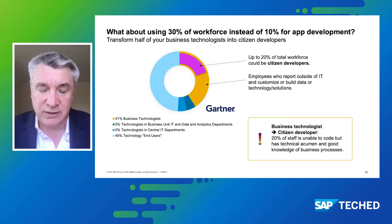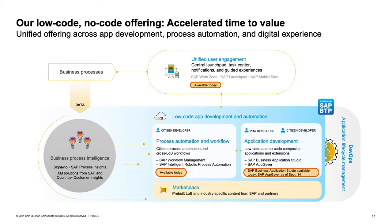Now let's look at the portfolio itself within SAP. There are three different aspects: process automation, application development, and a unified user experience. Before we dive into process automation and workflow, I just want to highlight how this beautifully dovetails with our business process intelligence side — where we look at insights to mine and understand best practice workflows, and then look to execute those improvements leveraging the process automation capability.